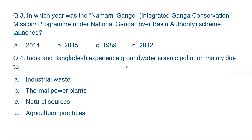Question 4: India and Bangladesh experience groundwater arsenic pollution mainly due to: A. Industrial waste, B. Thermal power plants, C. Natural sources, or D. Agricultural practices. Industrial waste, thermal power plants, and agricultural practices exist everywhere in the world. But the problem of groundwater arsenic pollution specifically experienced in India and Bangladesh is because of natural sources. The correct answer is C.